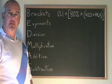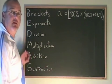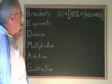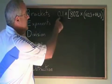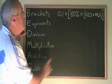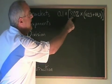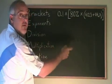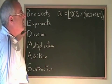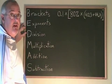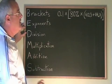Let's look at another example of the order of operations using decimals and percents. Here we have 0.1 times open square bracket, 80 percent times open round bracket, 40.3 plus 44.7, close the round bracket, close the square bracket. We have nested brackets.